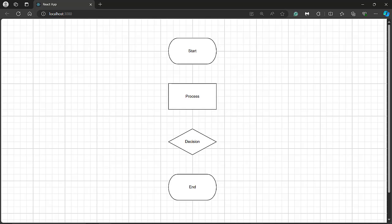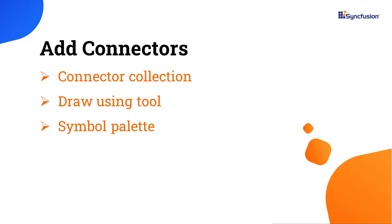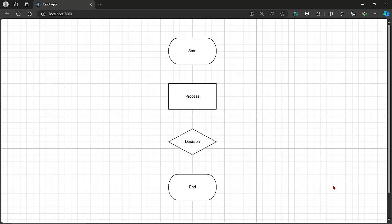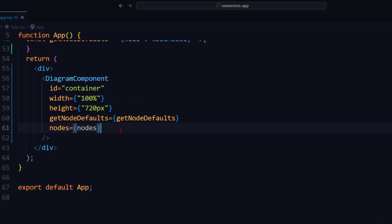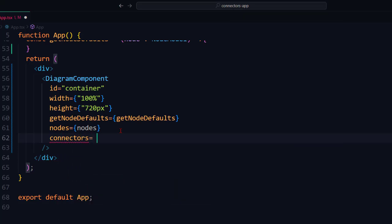Now I will show you how to add connectors to the diagram component. I can add connectors using a connector collection, by drawing a connector on the designer canvas, or using the symbol palette. Loading connectors from the symbol palette is explained in my previous video. First, I will connect the first and second node using the connectors property. In the diagram component tag, bind the connectors property with a value.